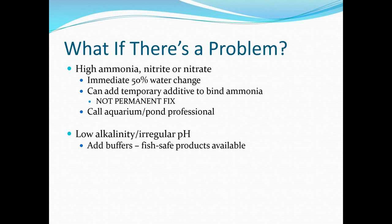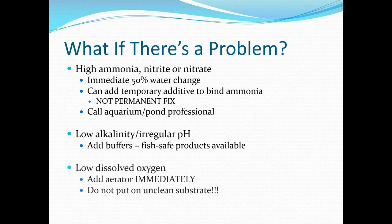If you have low alkalinity and irregular pH, your source water just might not have enough buffers in it to begin with, so you will need to add them. There are many fish-safe products available — most readily available is baking soda, which you can get at any supermarket. Any pH problems need to be corrected slowly so you don't shock the fish. If you have low dissolved oxygen, immediately add an aerator; however, if you suspect your bottom substrate hasn't been cleaned well, keep the aerator up off the bottom of your pond on a rock, milk crate, or flat surface, just in case you have hydrogen sulfide down there.